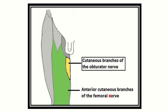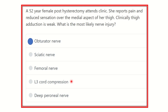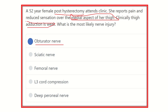Although the diagram shown is a male patient, the same anatomy applies to female patients: the cutaneous branch of the obturator nerve supplies the medial aspect of the thigh. Therefore, in a post-hysterectomy female, the obturator nerve is damaged. This explains both the reduced sensation over the medial thigh and the weak adduction, since the obturator nerve also innervates the adductor muscle group.